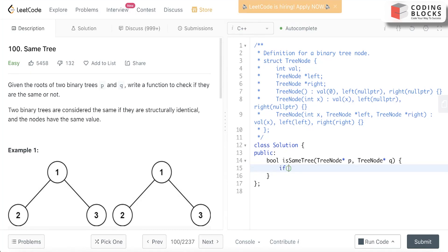For the base condition, we'll just check if p or q is equals to null or not using an OR operator. If this is the case, we will just return p equals equals q. If they are same then this is true, if they are not same then it won't make any sense.